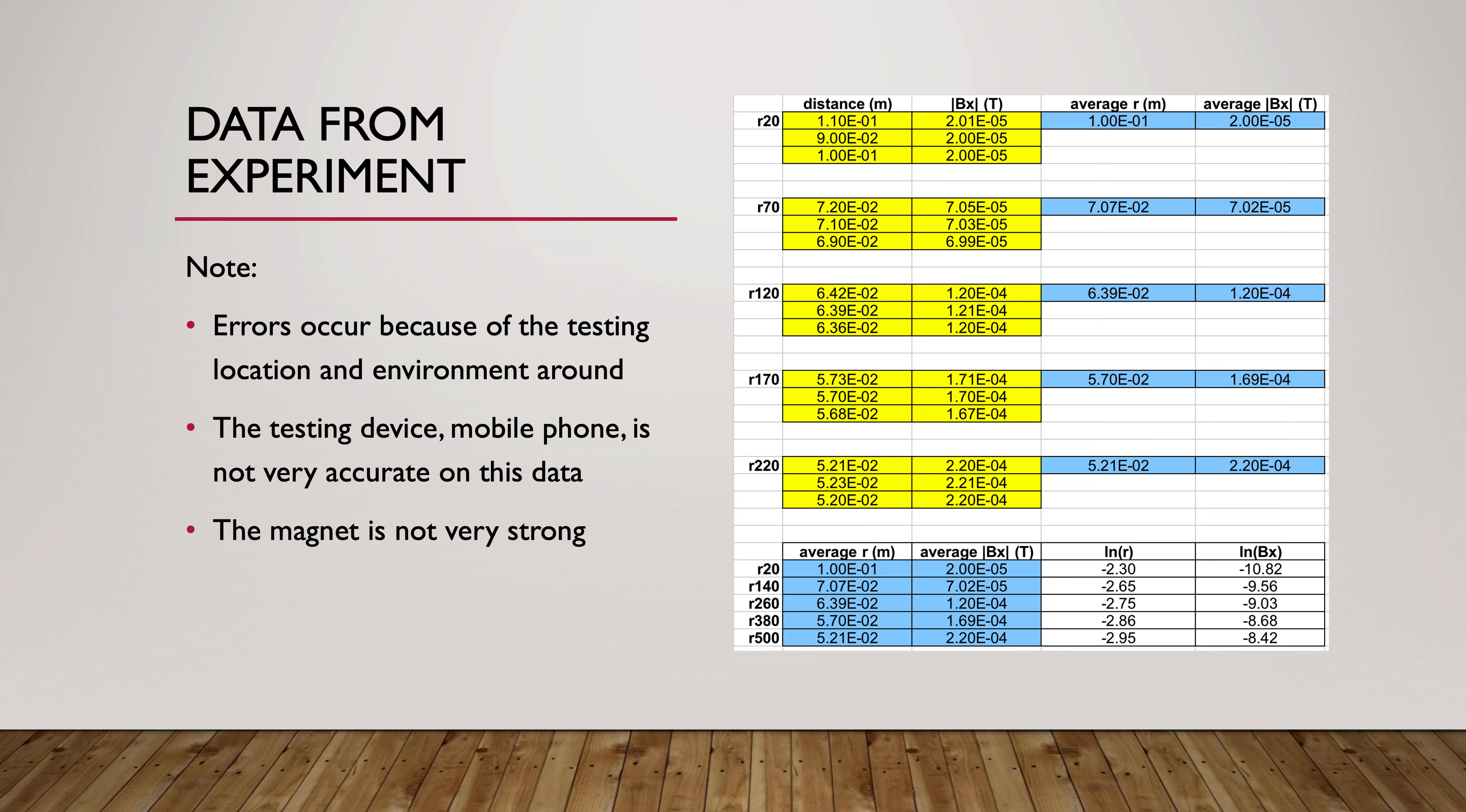We need to understand that this lab is designed for us to understand the relationship, and in the process, errors occur. There's also one problem: our magnet is not very strong compared to other strong magnets.